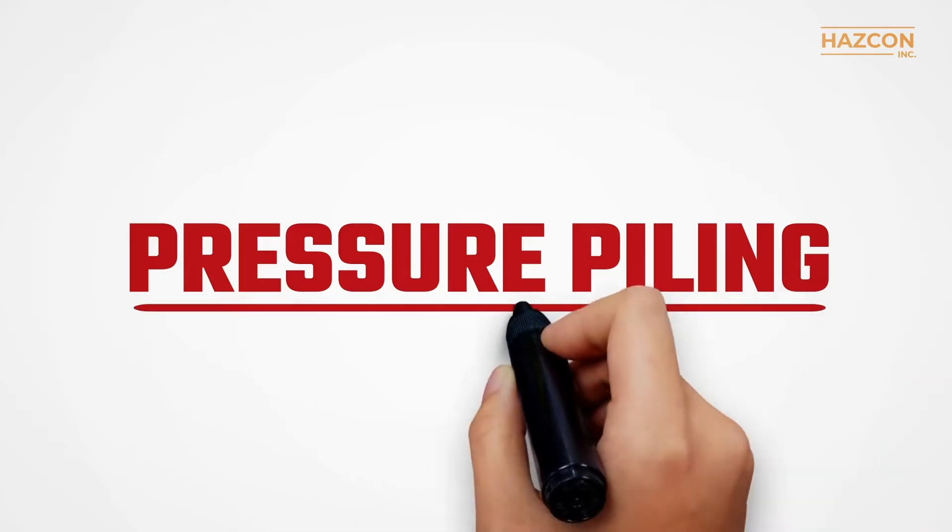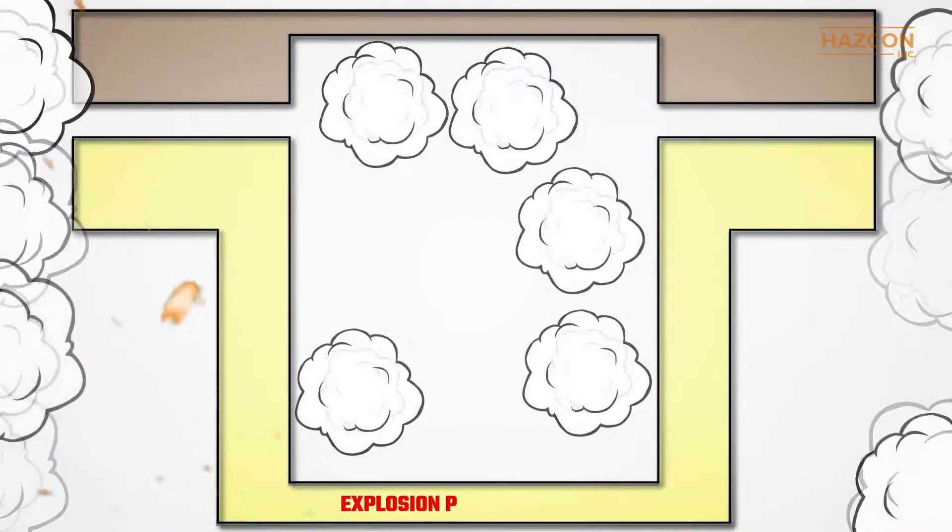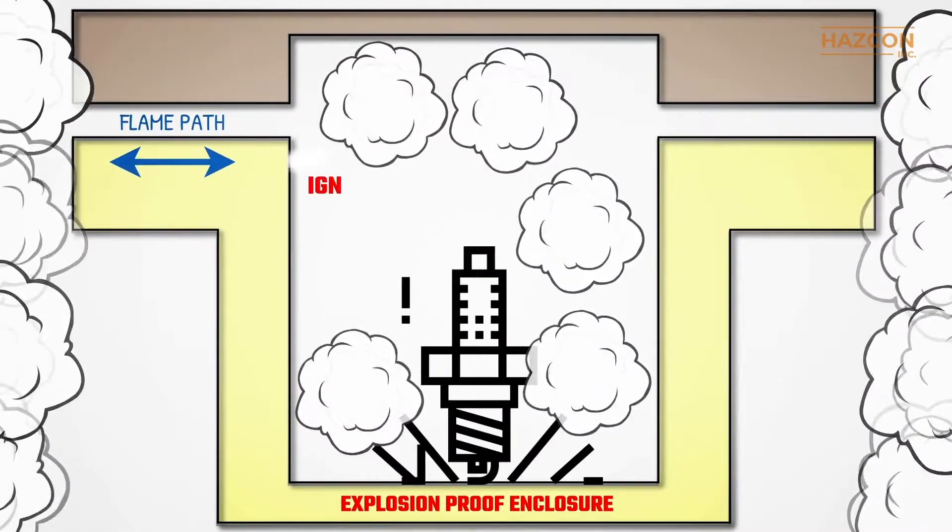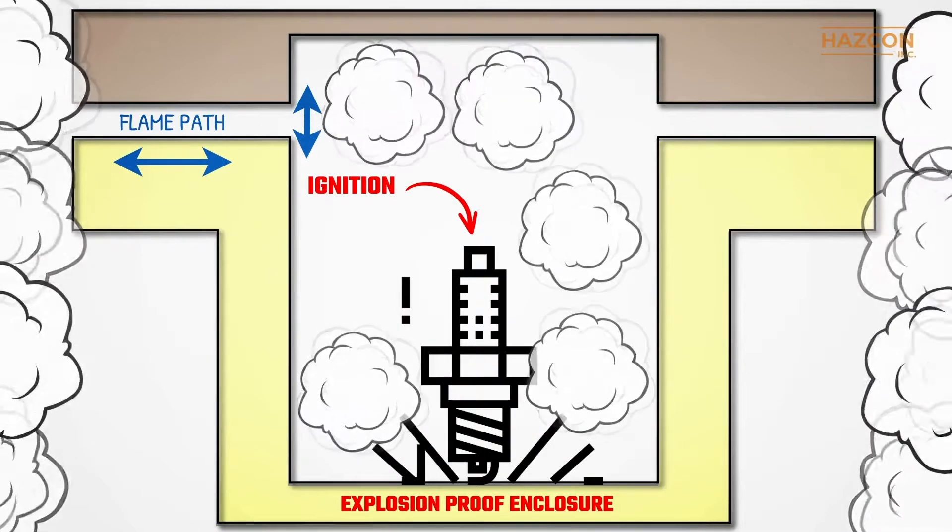You may have heard of the phenomenon called pressure piling, which adds to the severity of an explosion. In this animation, we're going to talk about pressure piling, which can happen when explosion-proof enclosures are not designed and installed properly for use in a hazardous area.